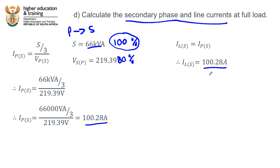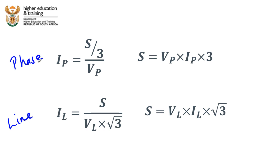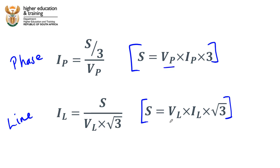This is a very important example to have worked through. Remember the key formulae: for phase quantities, I_phase = (S/3) / V_phase; for line quantities, I_line = S / (V_line × √3). These equations are the same whether connecting delta or star. You can also rearrange them to solve for voltages if needed. Choose whichever form is easiest to remember and rearrange as required.